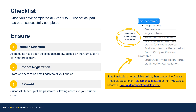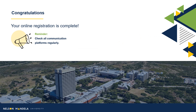Please pay careful attention to this checklist to ensure you have completed all important steps of this process: accurate module selection for your first year, proof of registration emailed to an address of your choice, and your password having been created or obtained. Congratulations — your registration is now complete. Please be reminded to check your communication platforms regularly. Regards, your Faculty Administrative Consultants, Faculty of Health Sciences.